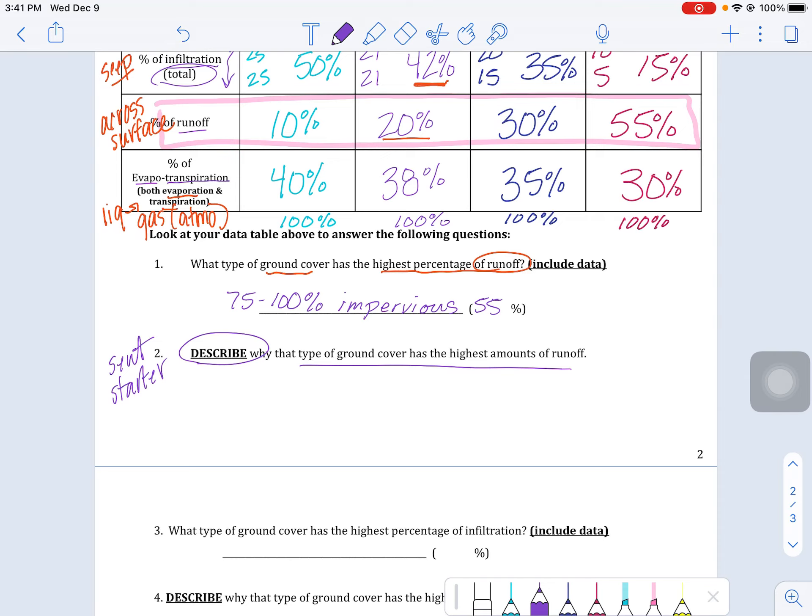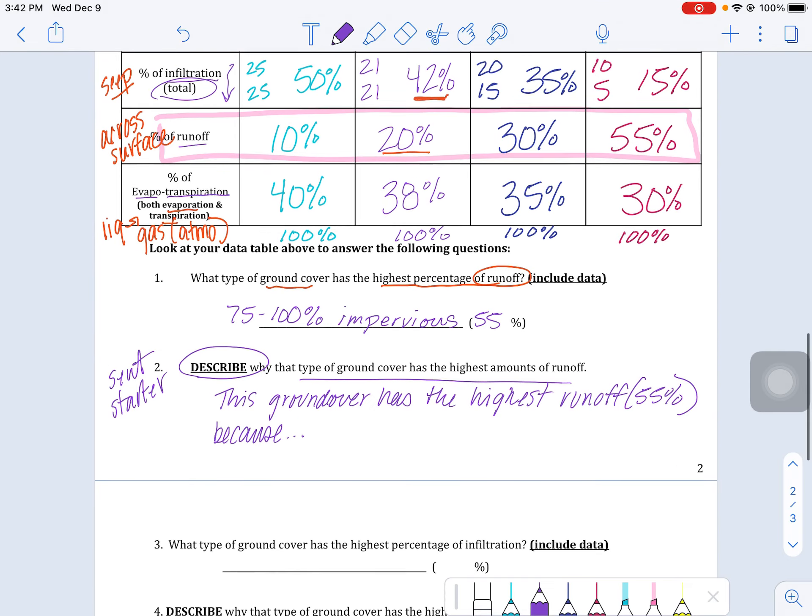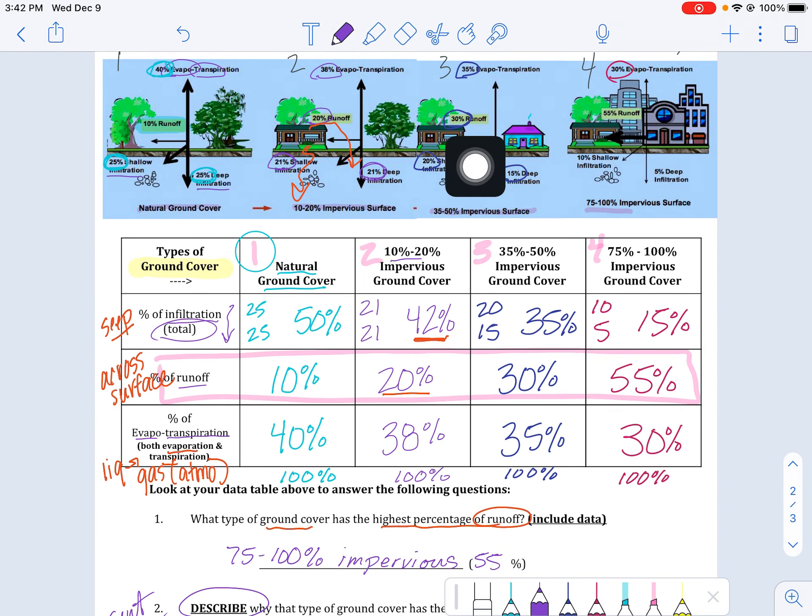Okay, so what we want to do here is just take from the sentence and kind of start our response. So describe why that type of ground cover has the highest amount of runoff. So this ground cover has the highest... We just want to restate what we're sharing about. It's always good to put the data in there to be specific. This ground cover has the highest runoff at 55 percent because why? What's going on in this picture that I don't see in all these other ones to make more water stay on or flow across the surface? So that's what you want to be explaining there.